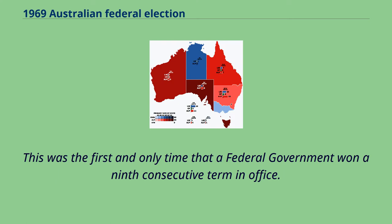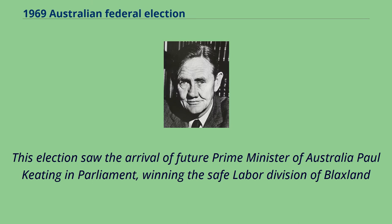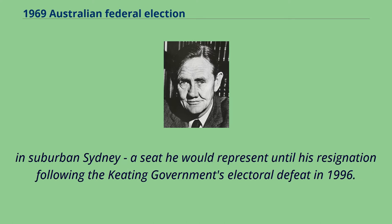This was the first and only time that a federal government won a ninth consecutive term in office. This election also saw the arrival of future Prime Minister Paul Keating in Parliament, winning the safe Labour Division of Blaxland in suburban Sydney, a seat he would represent until his resignation following the Keating government's electoral defeat in 1996.